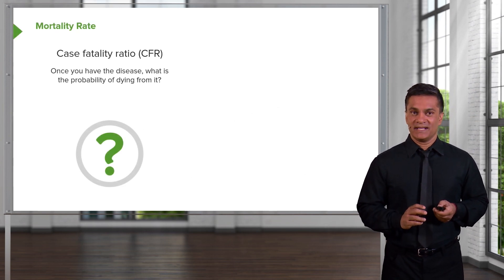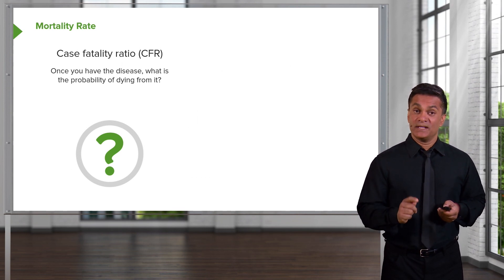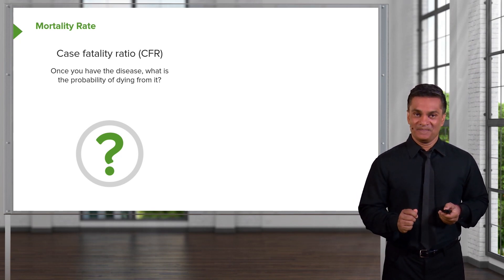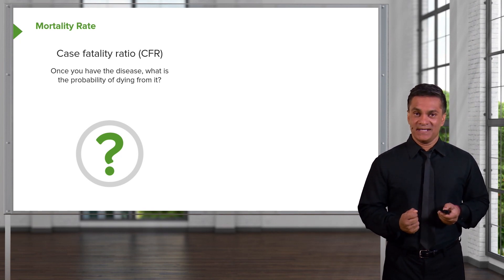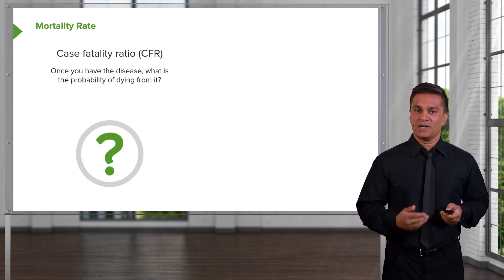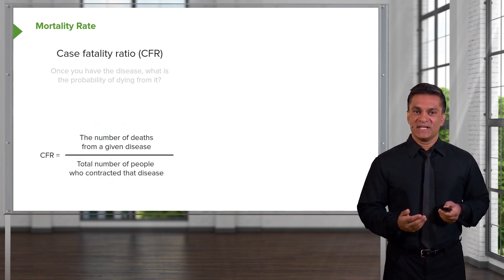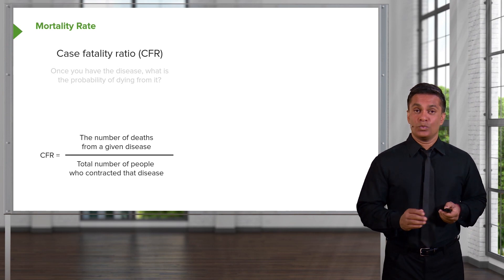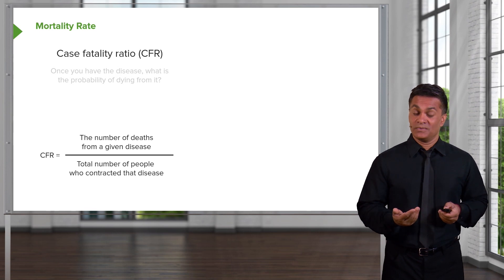Another important measurement of mortality is the case fatality ratio. It's a ratio — a proportion — that tells us, once you have a disease, what's the probability you're going to die from it. If the case fatality ratio is 1, or 100%, you're always going to die from this disease — it is perfectly lethal. If it's quite small, you'll probably recover. It's given as the number of deaths from a given disease divided by the total number of people who contract that disease. Clearly, the CFR will change as our ability to deal with certain diseases improves or decreases.